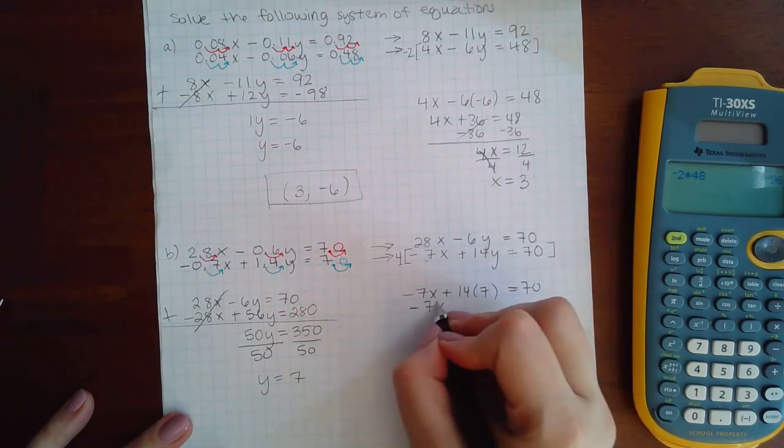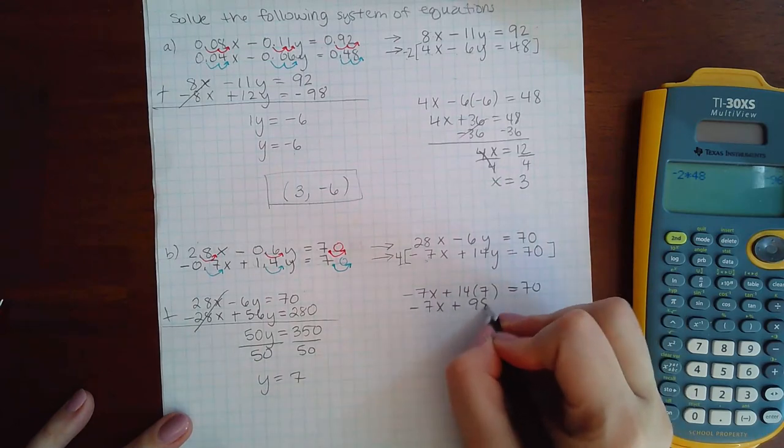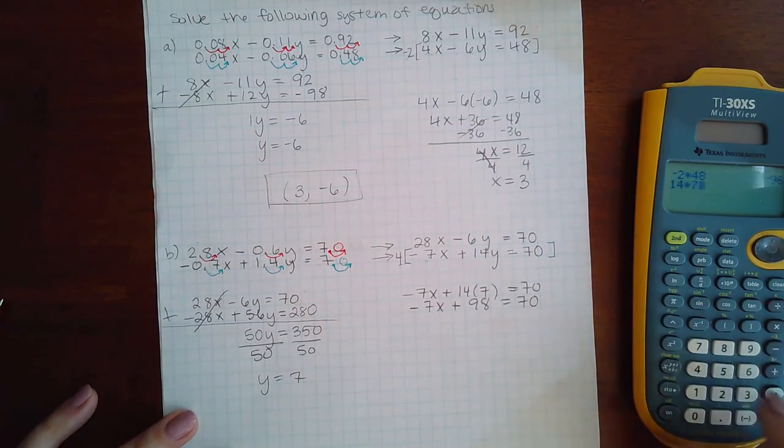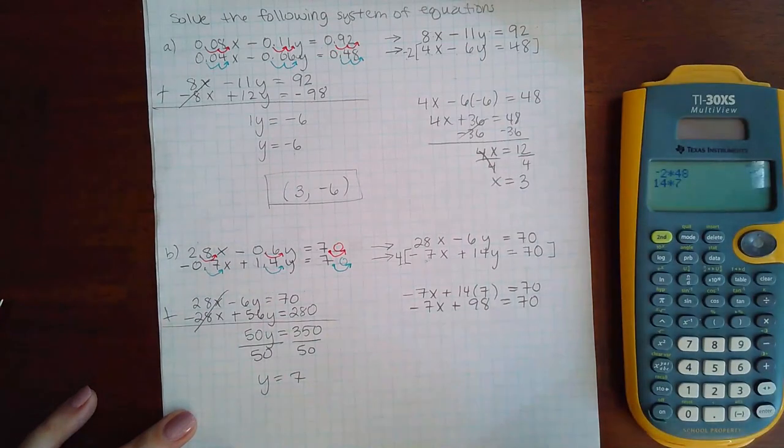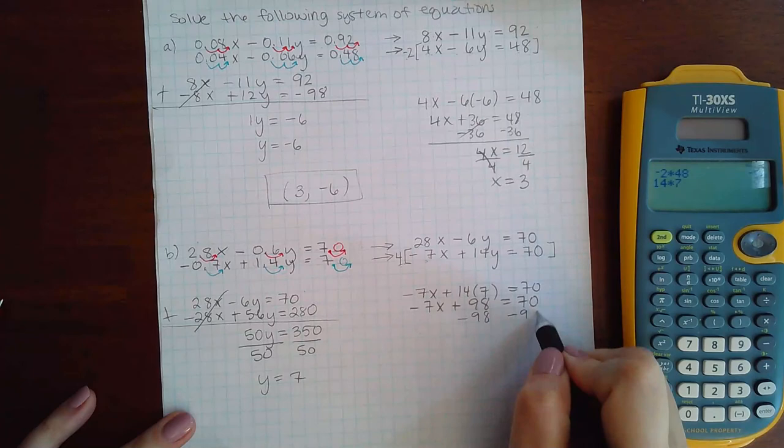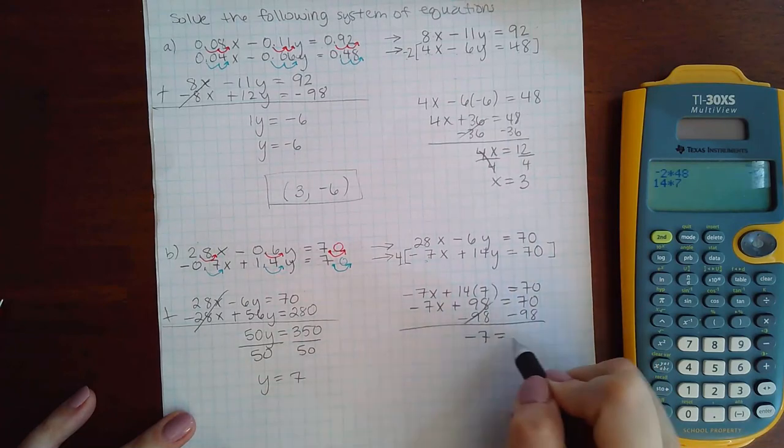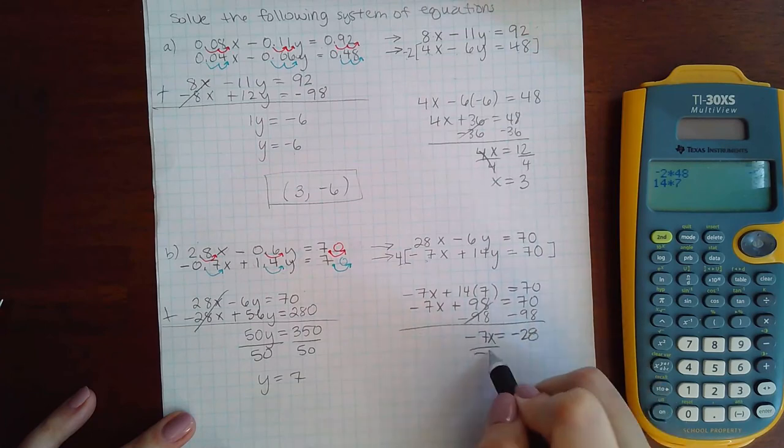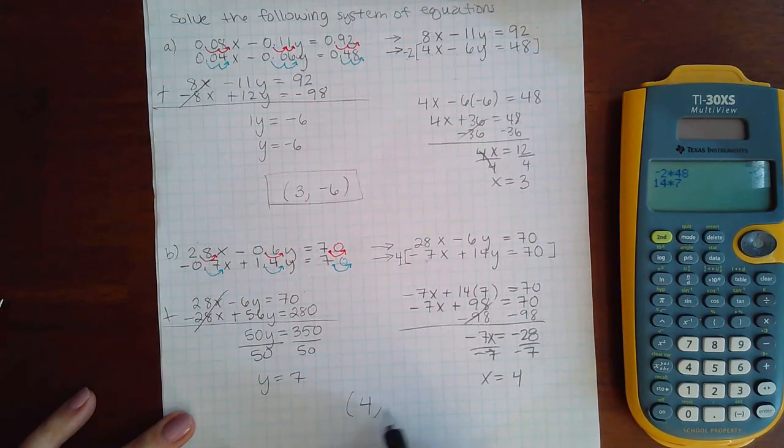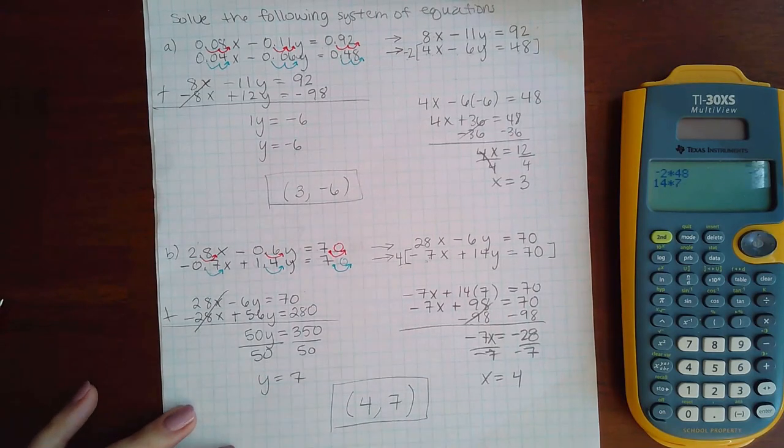So negative 7x plus 98 equals 70. That's right, let me check just because I always do weird things sometimes. Okay good, it is 98. Then I'm gonna minus 98. I get negative 7x equal to negative 28. Divide by negative 7 and I end up with x equals a positive 4. So the x coordinate was 4 and the y coordinate was 7. And that is it.